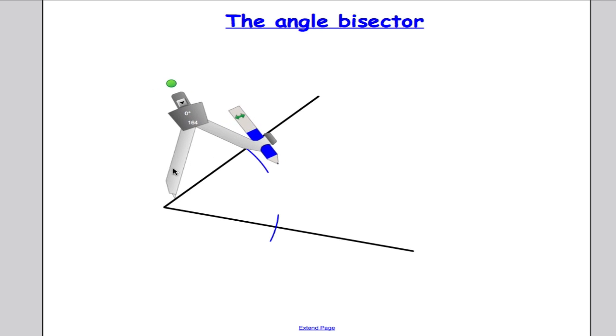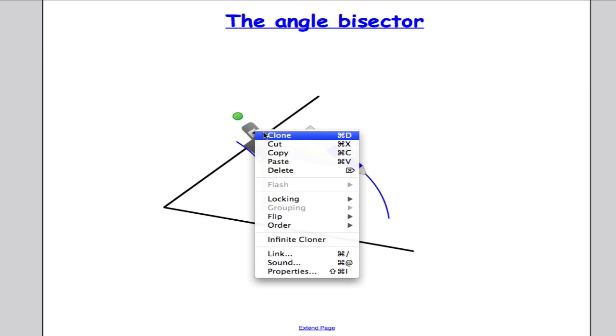Step two. Take your compass and put it on one of the arcs, and what you're going to do now is draw a second arc out here. Move your compass to the other arc that you drew earlier and draw another arc so that the two arcs that you've drawn cross each other.